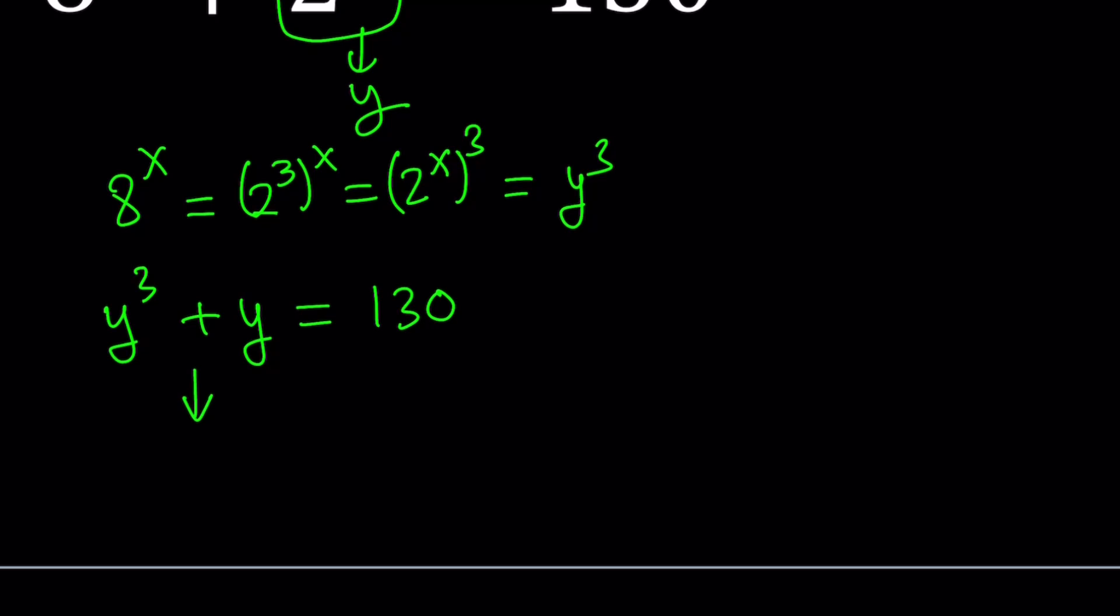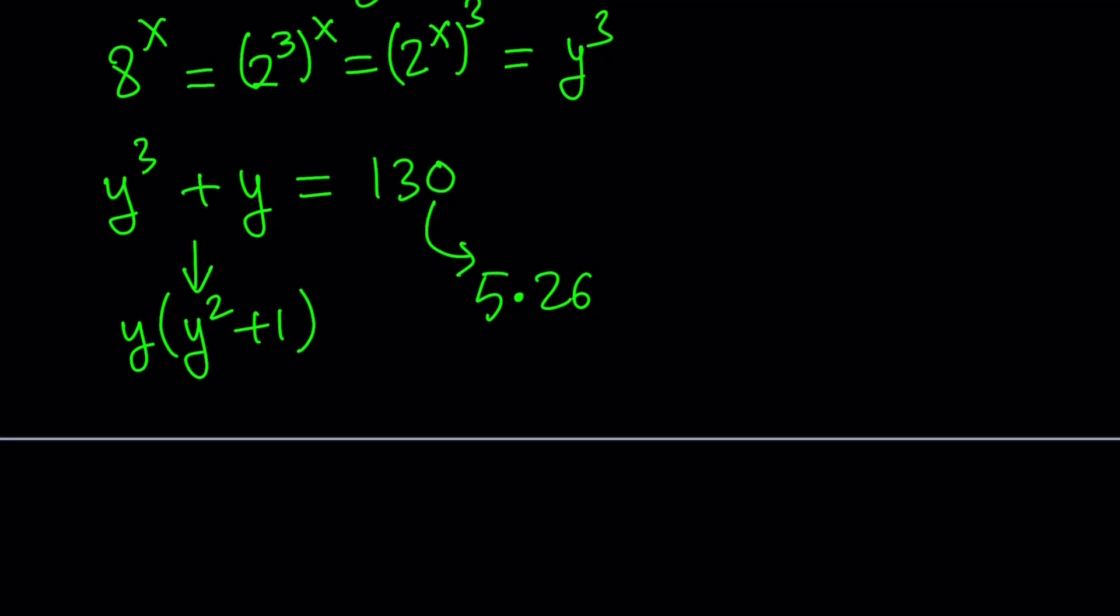So let's go ahead and write the left-hand side as y times y squared plus 1. So if I can get something similar to that, hopefully I can make a one-to-one correspondence. So 130 is 5 times 26, right? And remember the shortcut for multiplying by 5, especially with even numbers, you cut the even number in half and add a zero. 26 and 5 are related because 26 is 1 more than 25, so I can write it as 25 plus 1. And then I can write this as 5 times 5 squared plus 1.